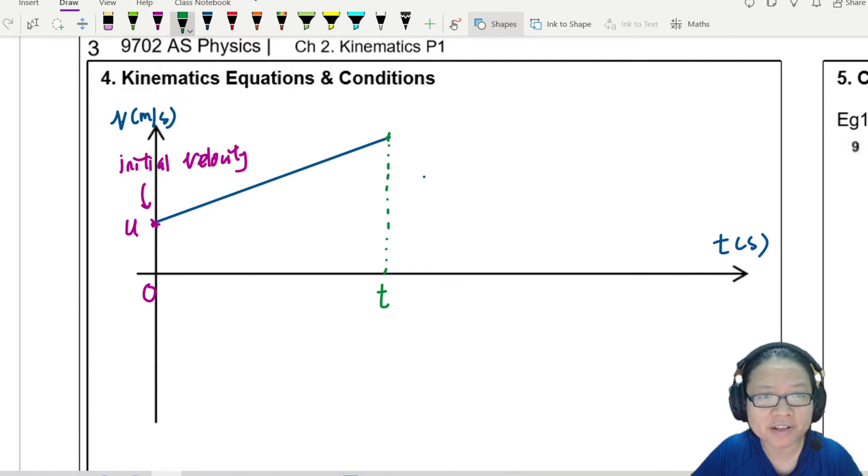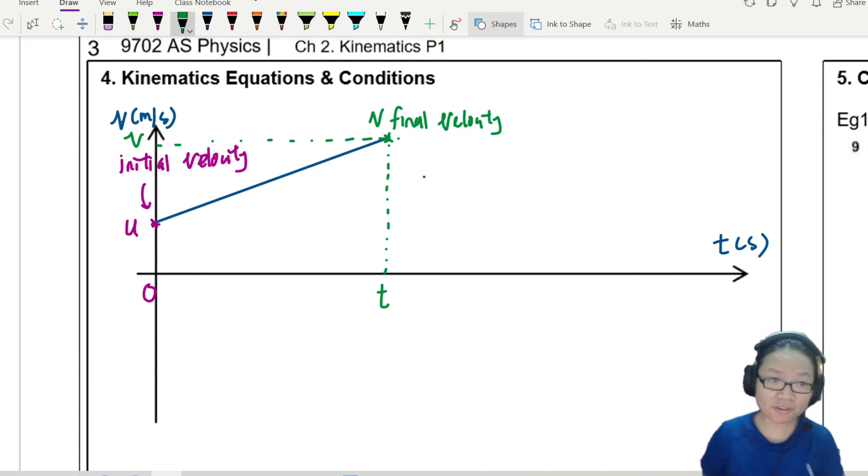So if I extrapolate out to this axis, this one is v. So this is a very straightforward graph from here because the gradient is constant.